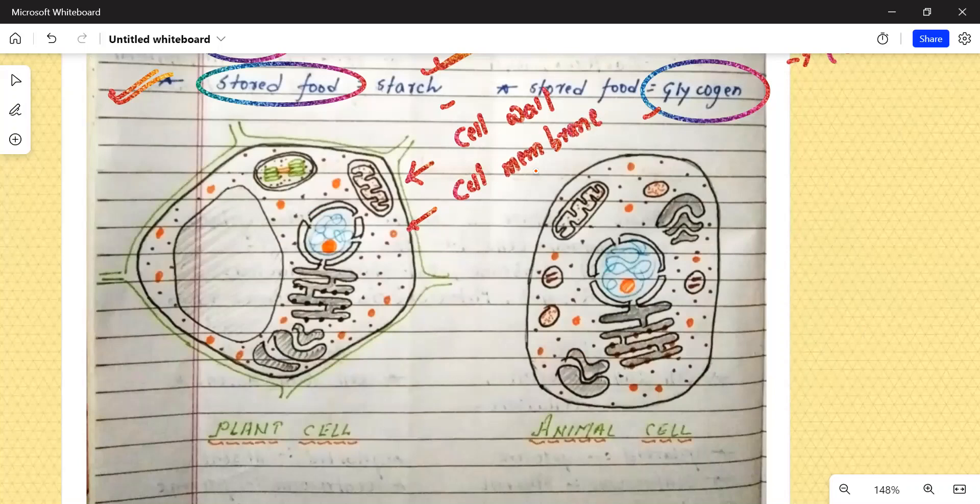Yahan par aapka and this cell membrane is common among both plant and animal cell. Agar baat karti hai, large vacuole, yeh kaafi bada hota hai, vacuole.